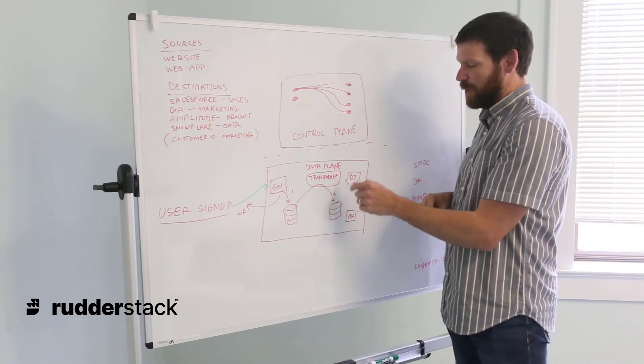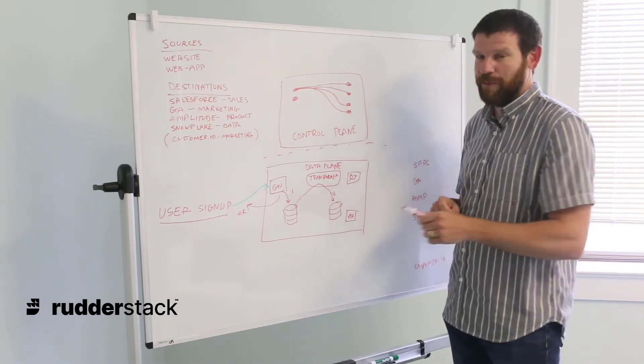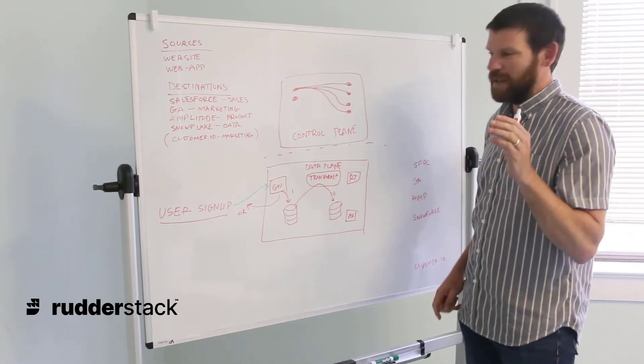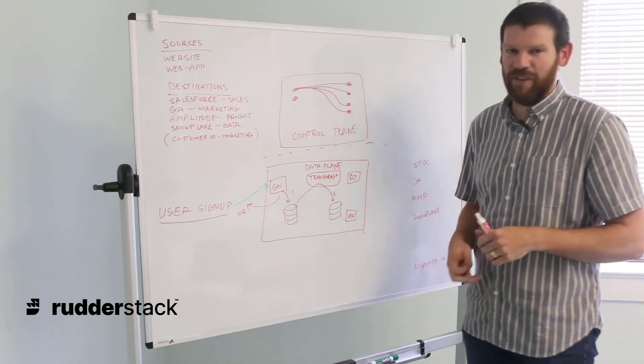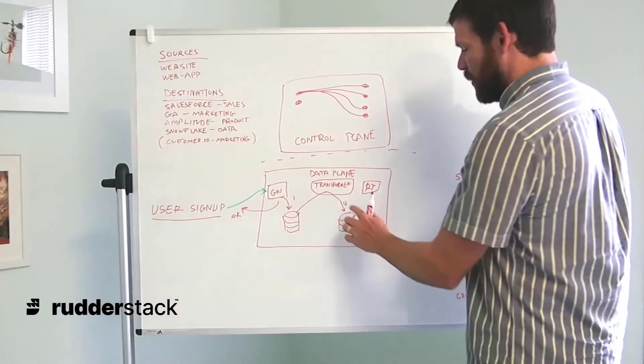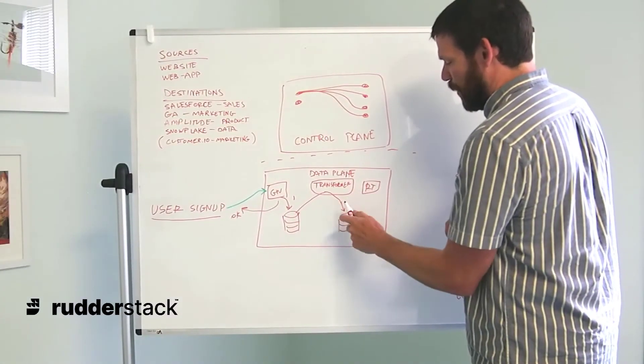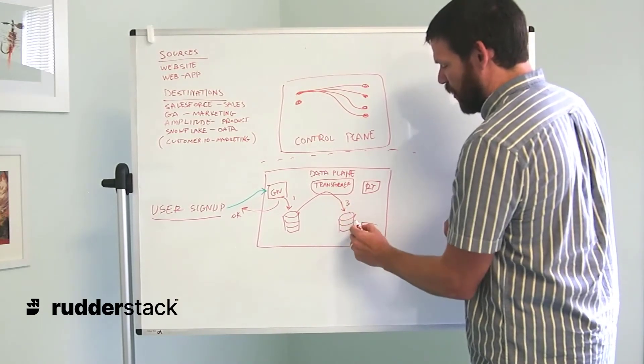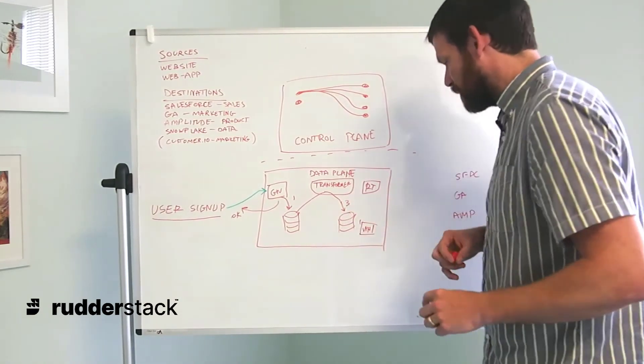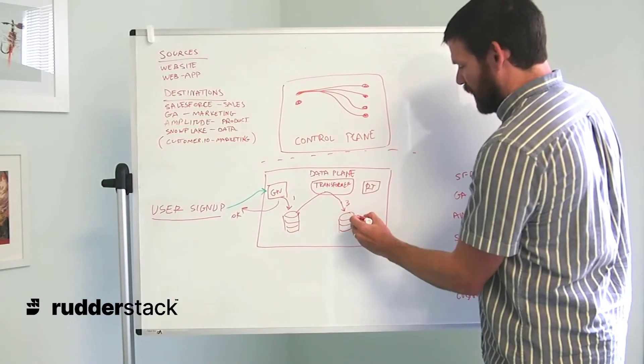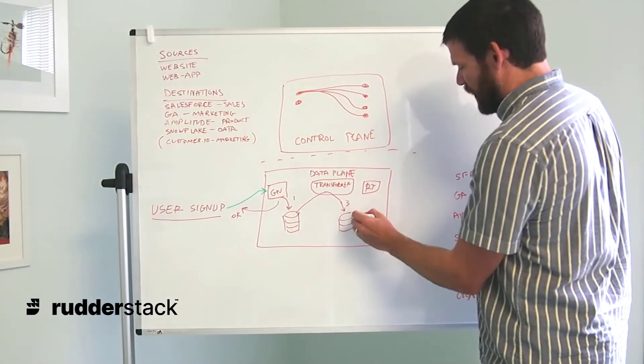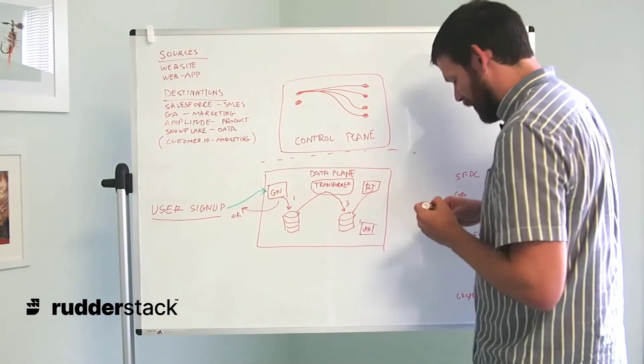So we now have four different events that are being stored temporarily in the router table. That's not completely true because, as I mentioned earlier, Snowflake being a data warehouse is going to be treated a little bit differently. It's actually going to be handled in a different table, but for the purposes of this, we're going to show them here. At this point, the router is going to take these events and then send them out into the downstream tools.